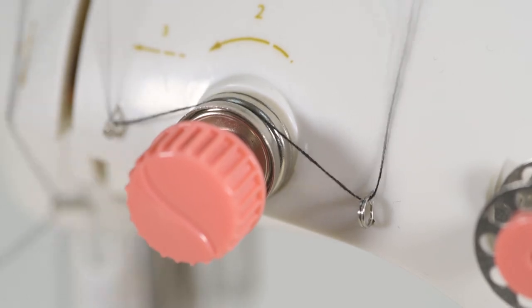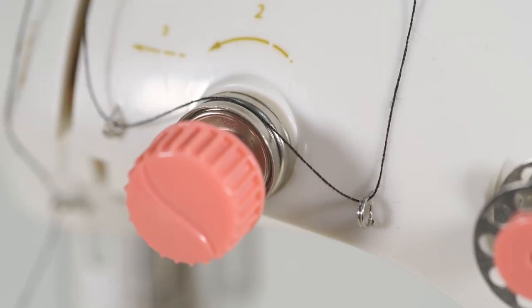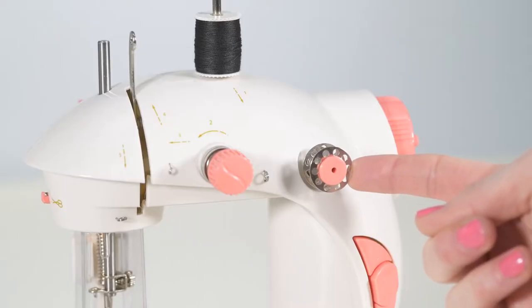An easy way to resolve this is to move your top thread from the thread spool at the top of the machine and use a thread that is wound onto a bobbin and placed on the front facing bobbin holder.